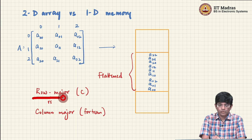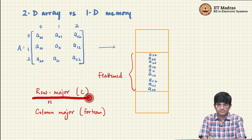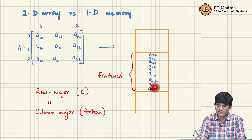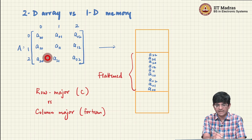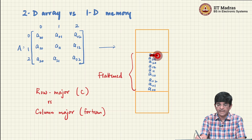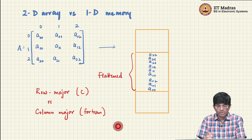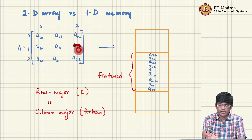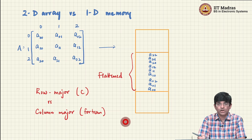C uses what is called row-major format, where rows get stored as adjacent values. So a[0][0], a[0][1], a[0][2] go in adjacent memory locations, followed by a[1][0], a[1][1], a[1][2], then a[2][0], a[2][1], a[2][2]. Other languages, most notably FORTRAN, use column-major format — storing a[0][0], a[1][0], a[2][0] first, then moving to the next column.